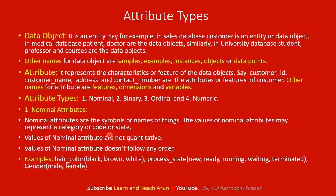The first type is Nominal Attributes. Nominal attributes are symbols or names of things. They can represent a category, code, or state. For example, hair color is a nominal attribute. Process state — such as new, ready, running, waiting, or terminated — is also a nominal attribute.